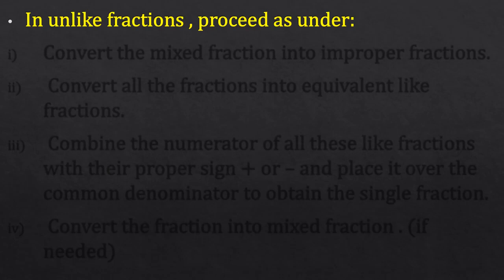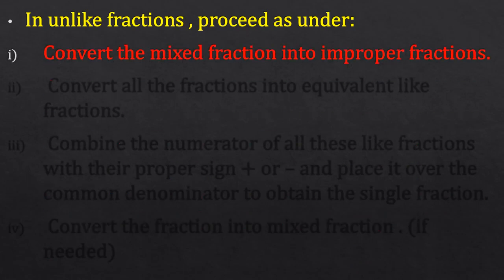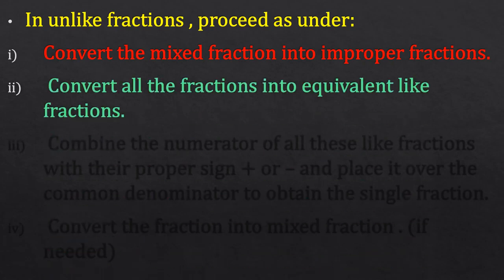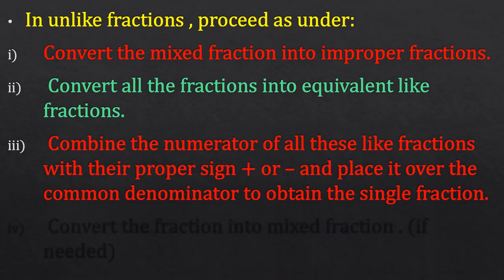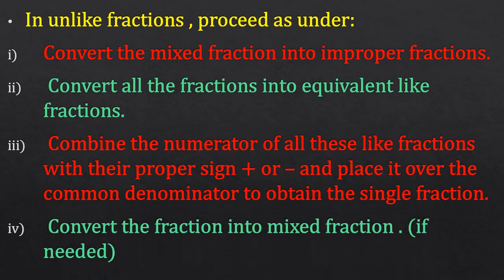For unlike fractions, follow these steps: First, convert any mixed fraction into an improper fraction. Second, convert all fractions into equivalent like fractions by taking the LCM. Then add or subtract the numerators and write the common denominator. Finally, if the result is an improper fraction, convert it back into a mixed fraction.